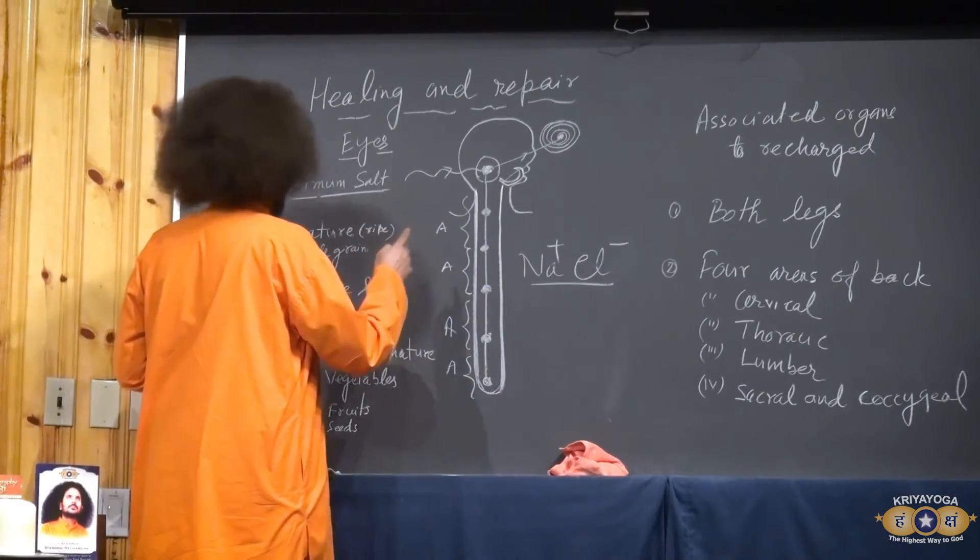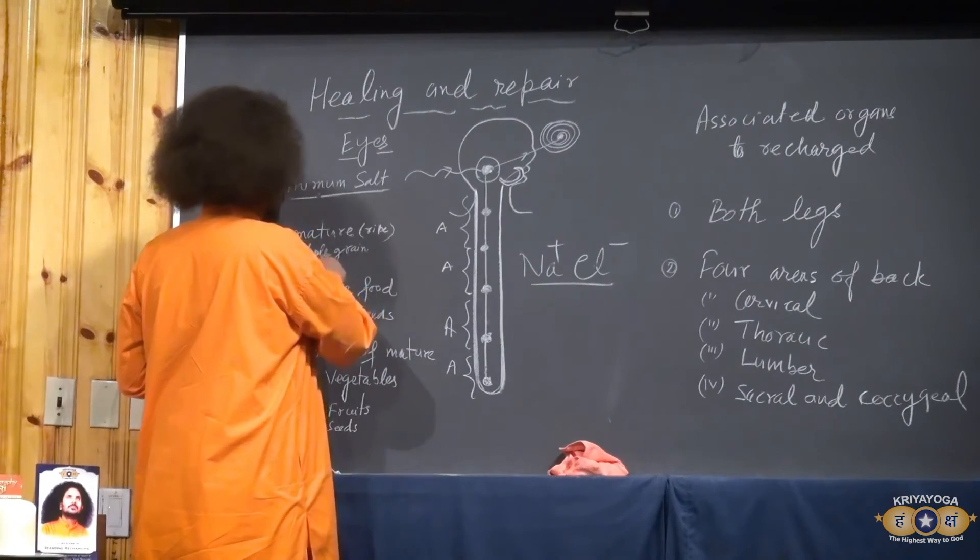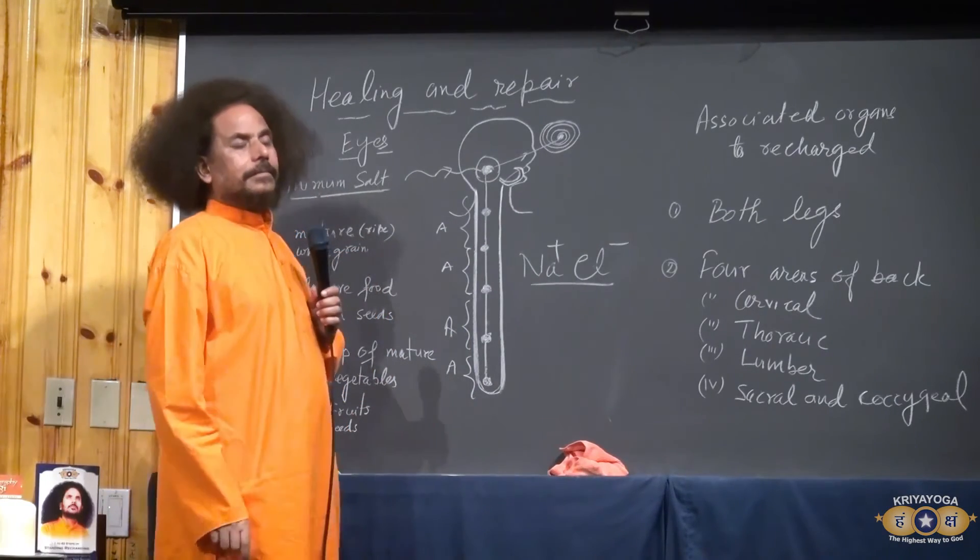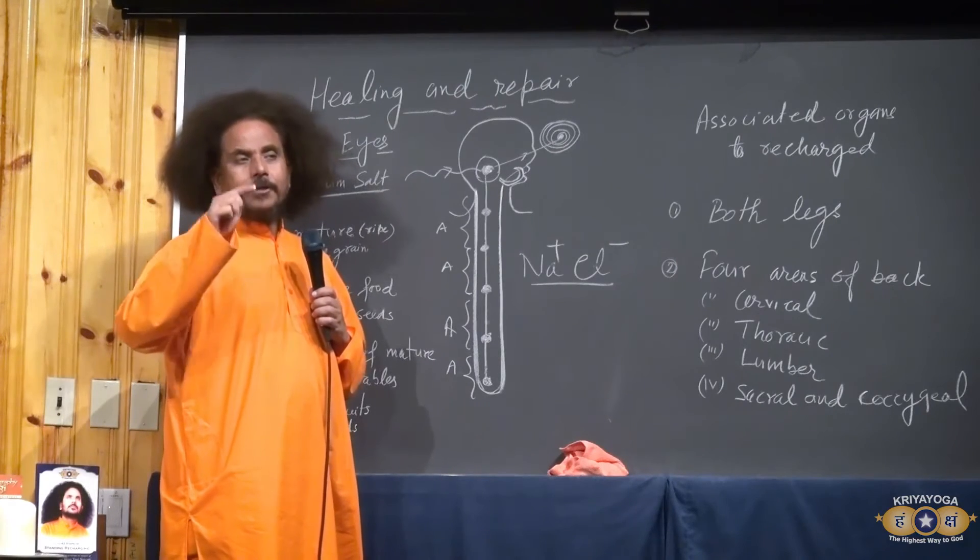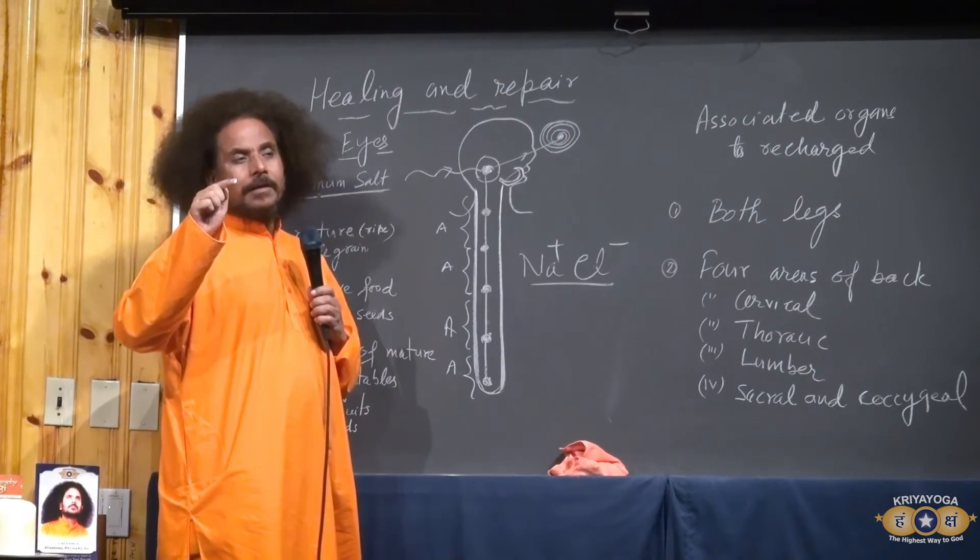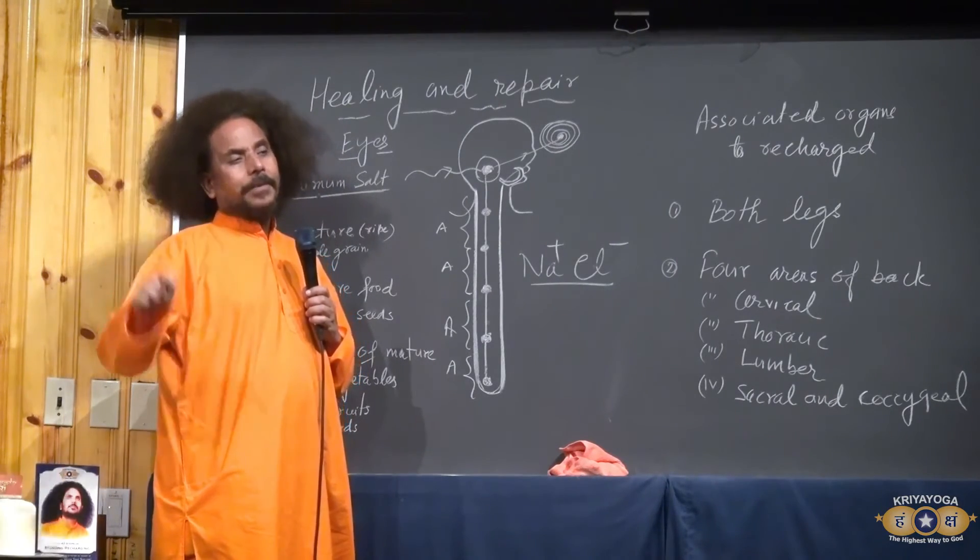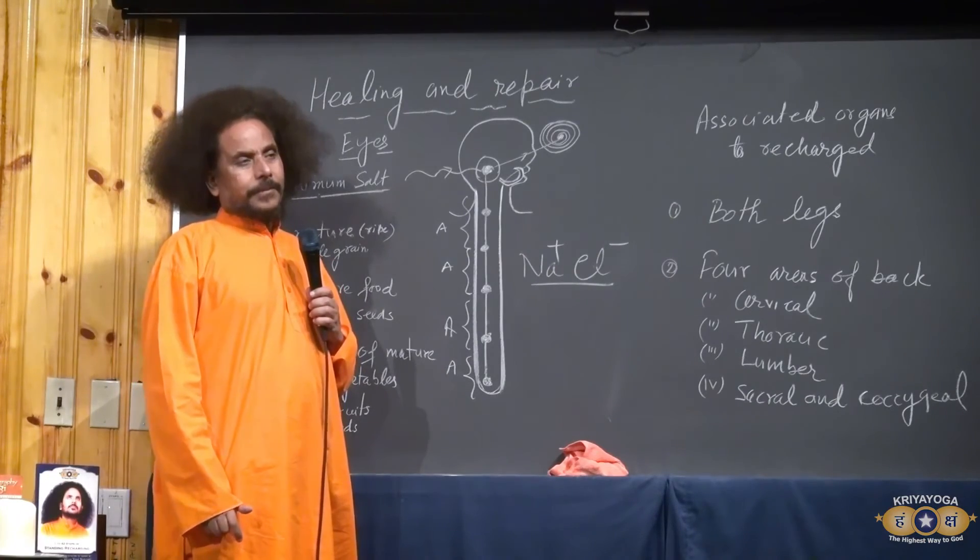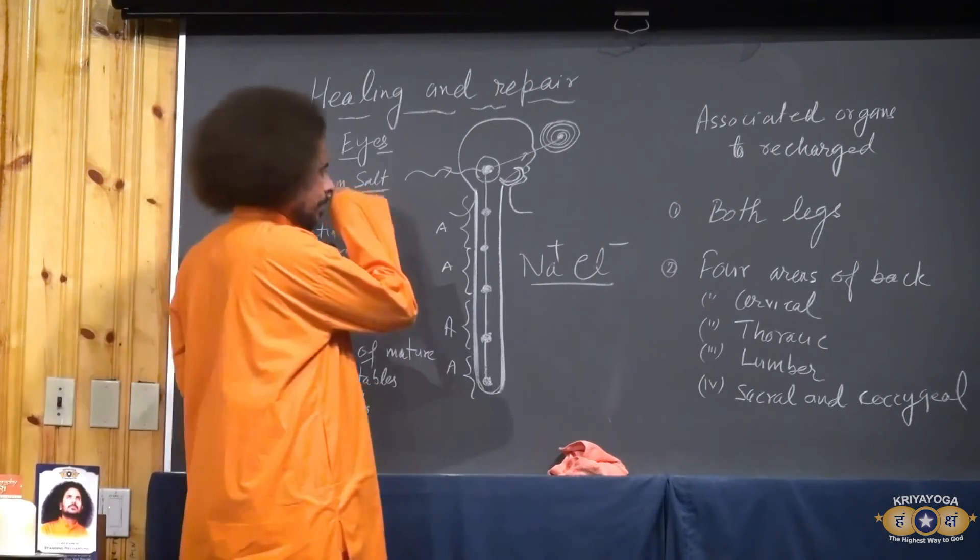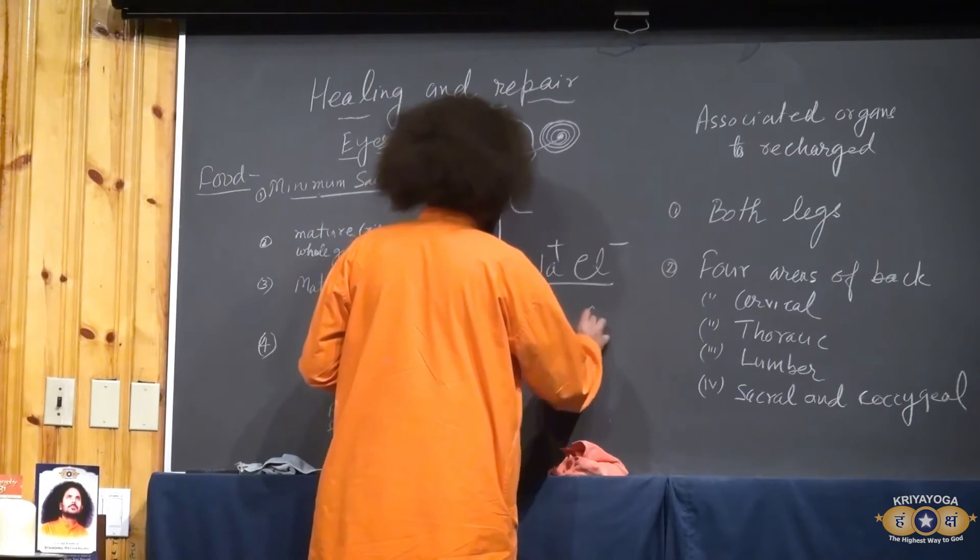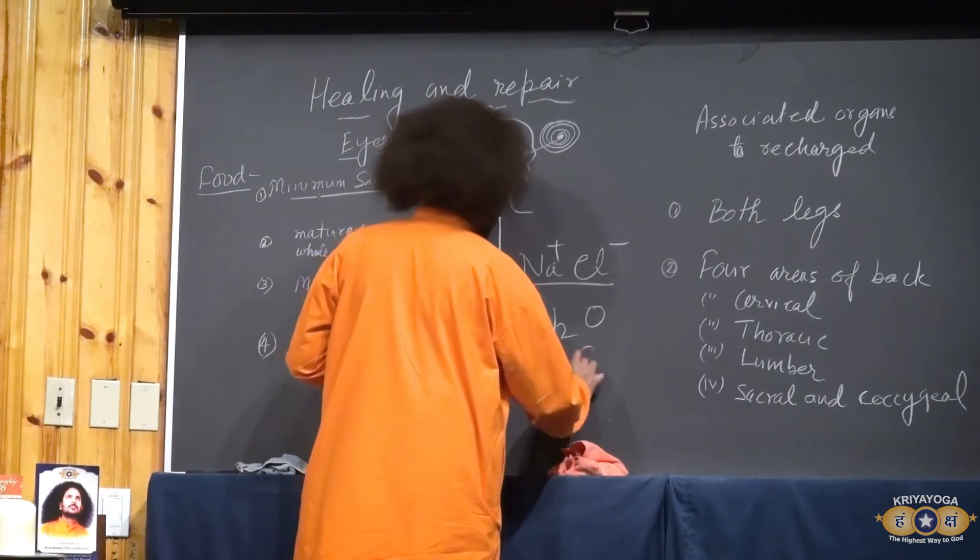Second thing, you have to take mature, ripe, whole grain with the husk. In that you will find natural salt in the form of covalent compound. What is the covalent compound? Let us see H2O. This is the water. In this, this is oxygen. We have two attachments.